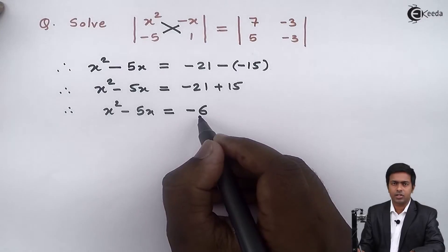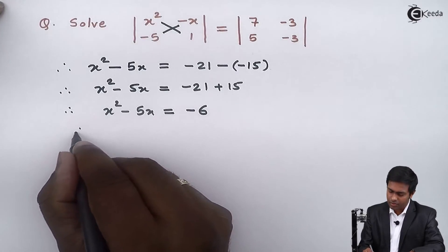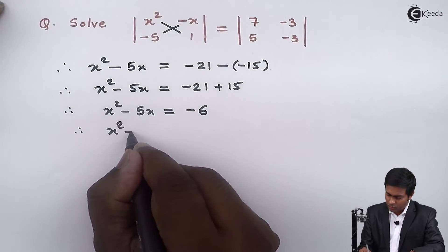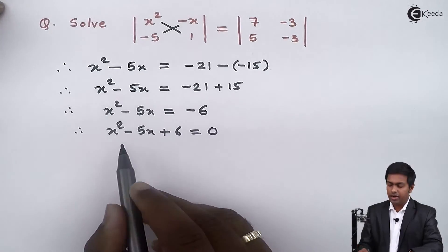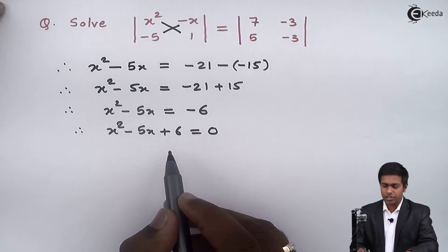So I will take this minus 6 on the left hand side, so that we will get x square minus 5x plus 6 equal to 0 and it is a quadratic equation.